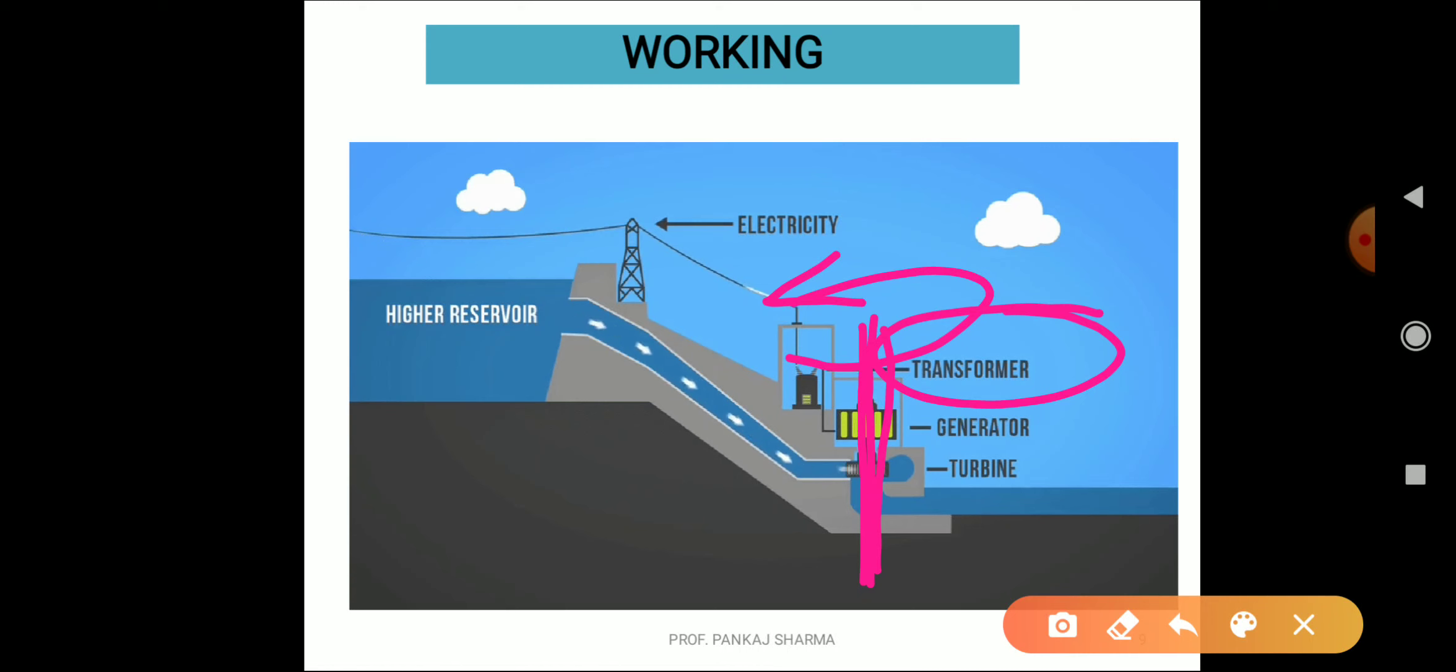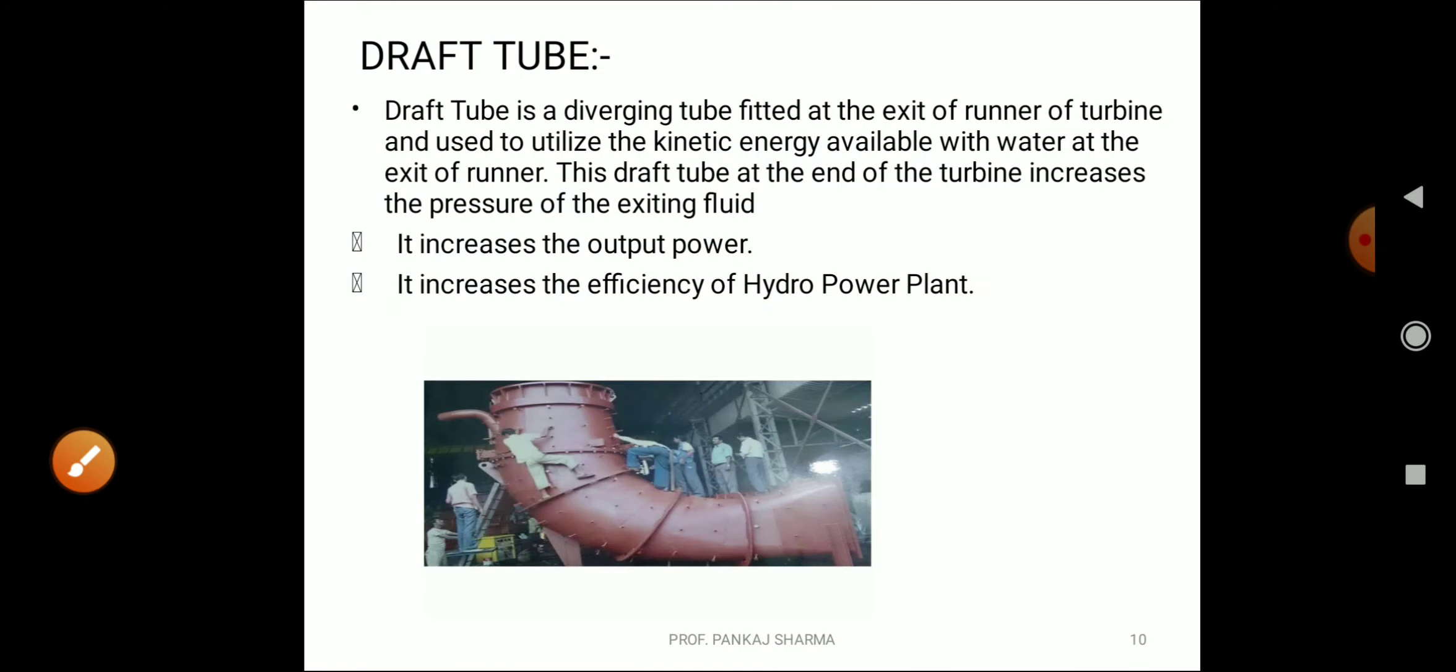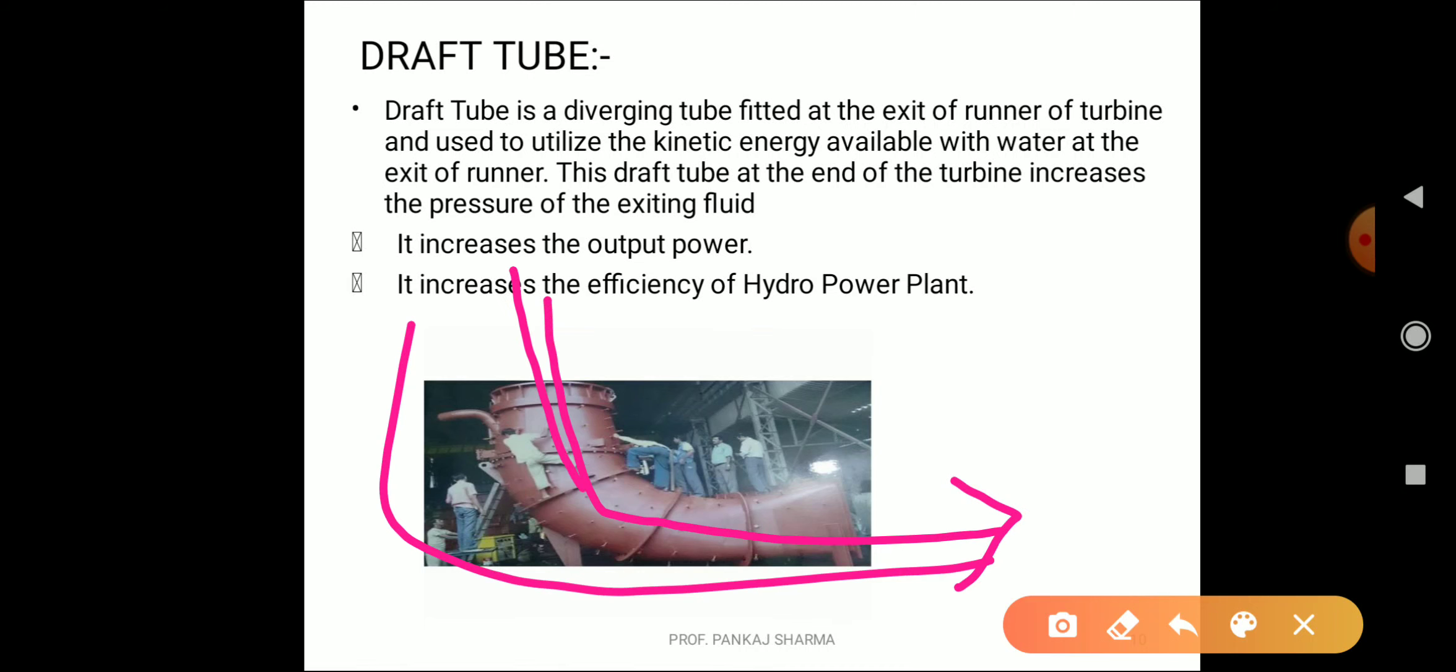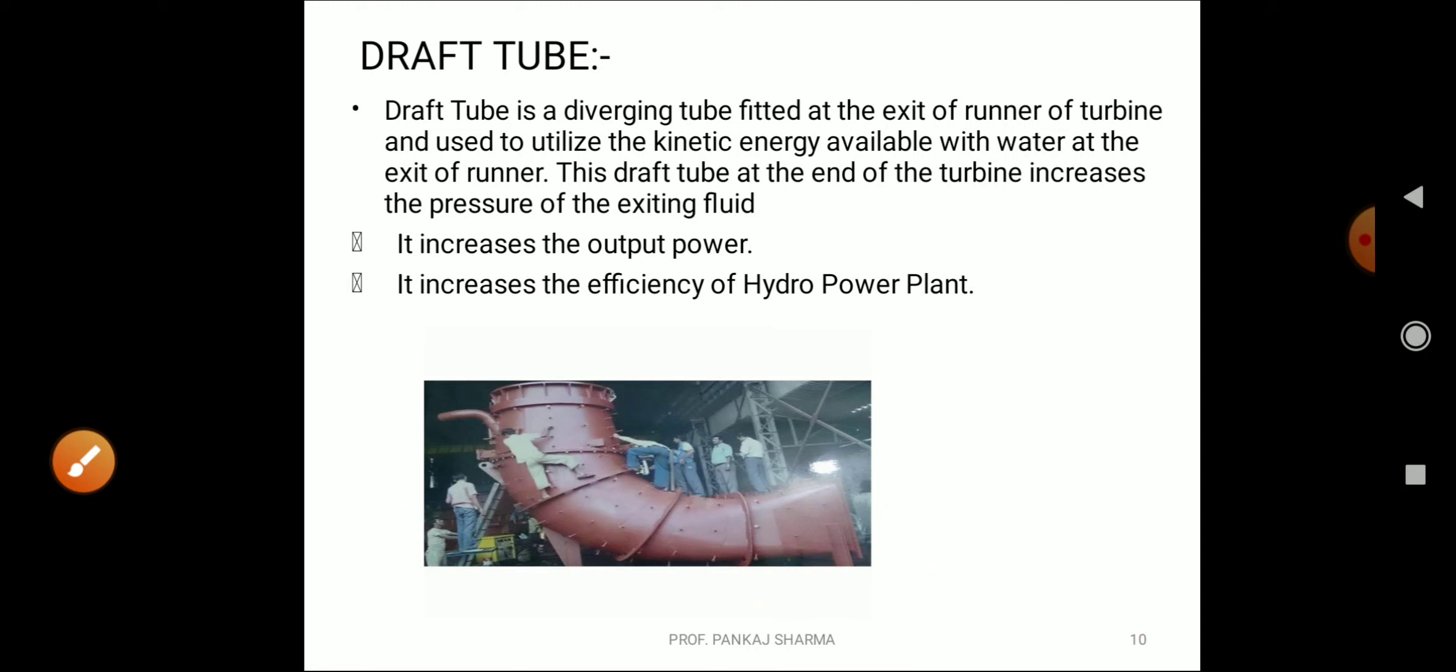Now come to draft tubes. This draft tube is actually a shape which tends to convert the already higher kinetic energy into greater velocity. It's a diverging tube fitted at the exit of runner of turbine and is used to use the kinetic energy available with water at the end of runner, exit of runner. This draft tube at the end of turbine increases the pressure of the exiting or outgoing fluid. It increases the output power and it also increases the efficiency of hydropower plant.